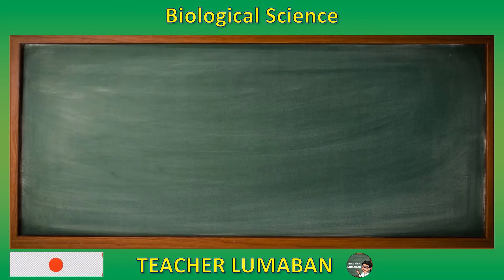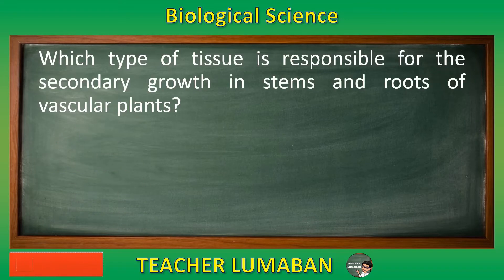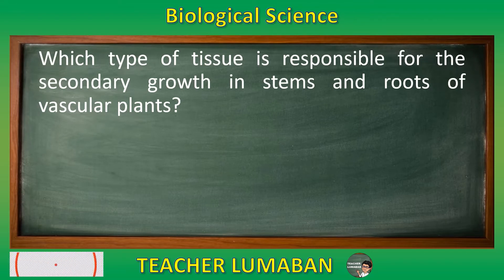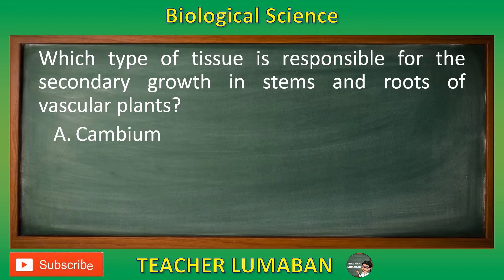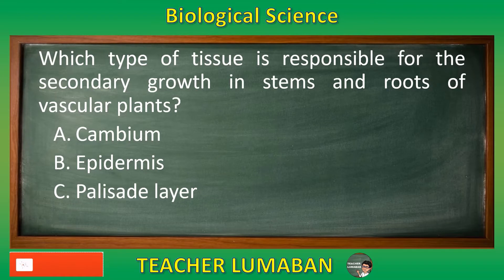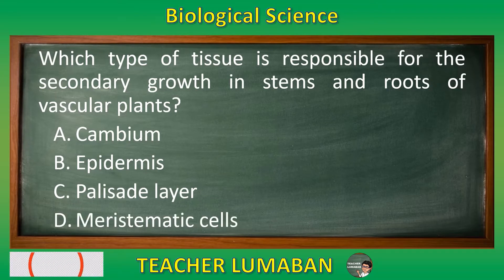Which type of tissue is responsible for the secondary growth in stems and roots of vascular plants? Letter A: Cambium. Letter B: Epidermis. Letter C: Palisade layer. Letter D: Meristematic cells.